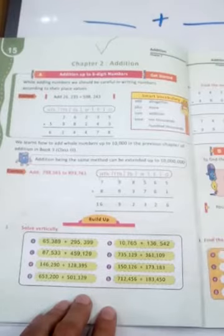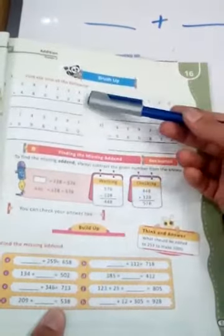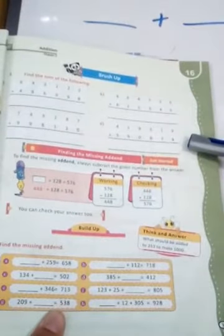On the loose sheet, I hope you had already done it. Now move on to page number 16. On page number 16, the first question is find the sum of following. You have to solve those sums in the book.